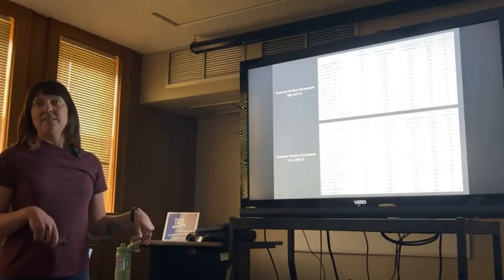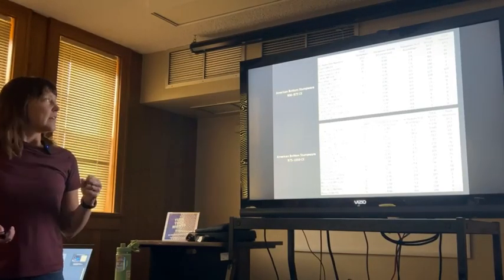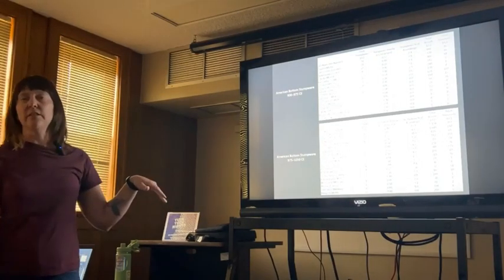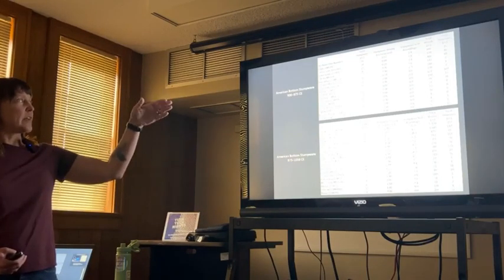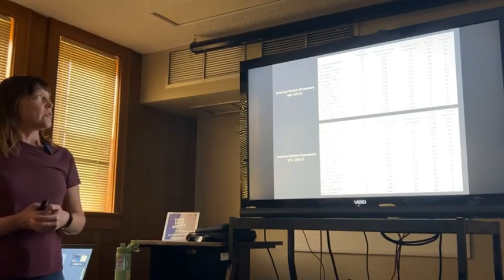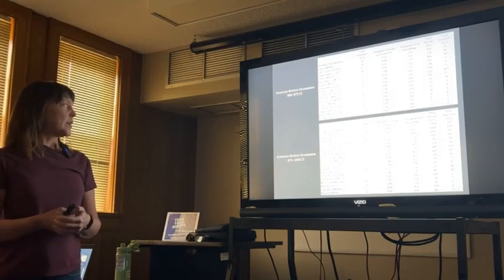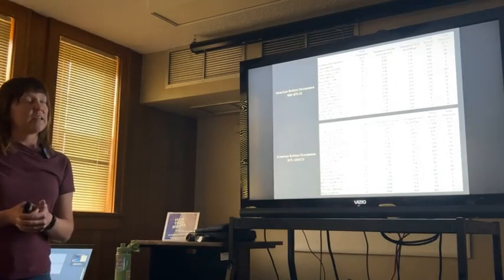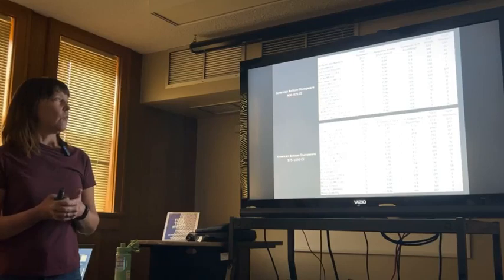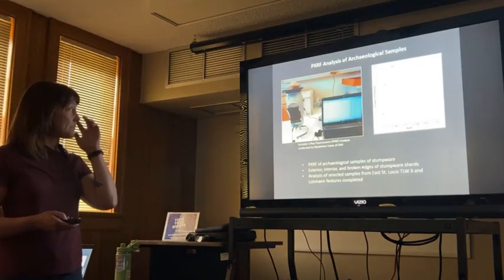This is showing the distribution of stumpware among the late portion of the Terminal Late Woodland period, 975 to 1050. This is the densest settlement during that pre-Mississippian time. You see it's distributed throughout the occupation, concentrated in some areas. Those are also the areas where the occupation was densest. If we standardize it by the total number of structures, in the early part of the Terminal Late Woodland it was probably about one stumpware per structure. In this later part, it was up to two and a half per structure. Basically what this is telling me, along with the morphological variation, is that people were making and using these at a household level. In the earlier part of this time period, I think they were experimenting with it.